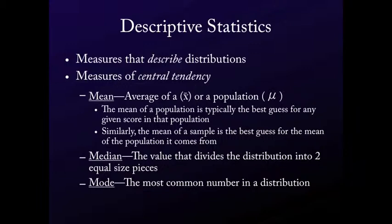The median is just the value that divides the distribution into two equal size pieces. So if you take every single number, you line them up, you take the middle one. Or if there's two middle ones because there's an even number, you divide it in half. Makes sense. You're probably familiar with that.